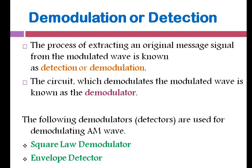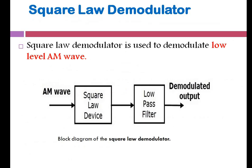We have two kinds of demodulation techniques: the first is the square law demodulator and the second is the envelope detector. First we will go for the square law demodulator. This demodulator is specially used for low level amplitude modulated waves — meaning a very low modulation index.